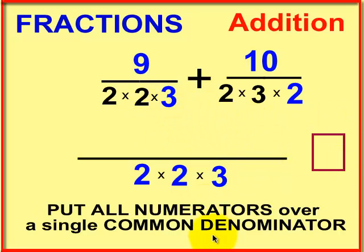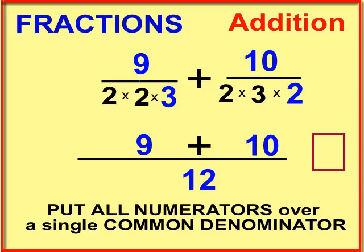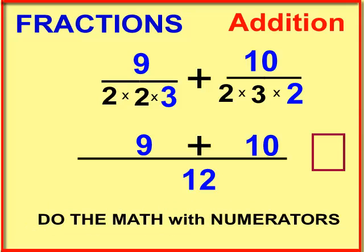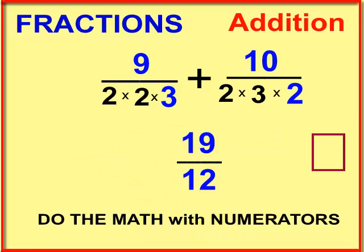The next step is to put all the numerators over a single common denominator. We have the common denominators two times two times three. We're going to move the nine plus ten down there. I'm going to go ahead and multiply out the new common denominator—two times two times three, which is twelve.